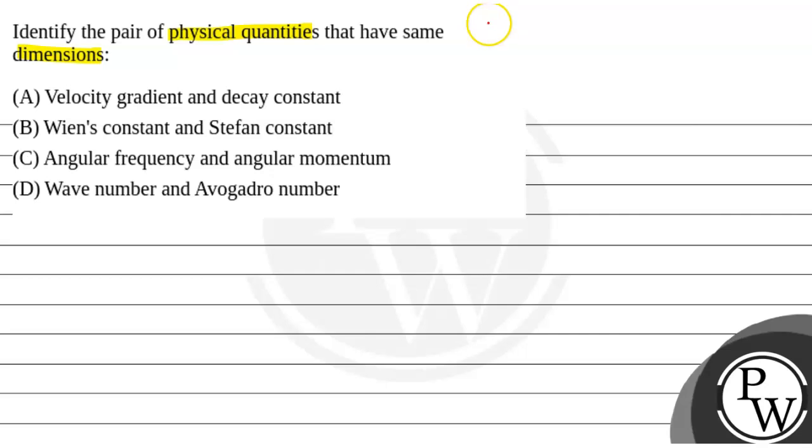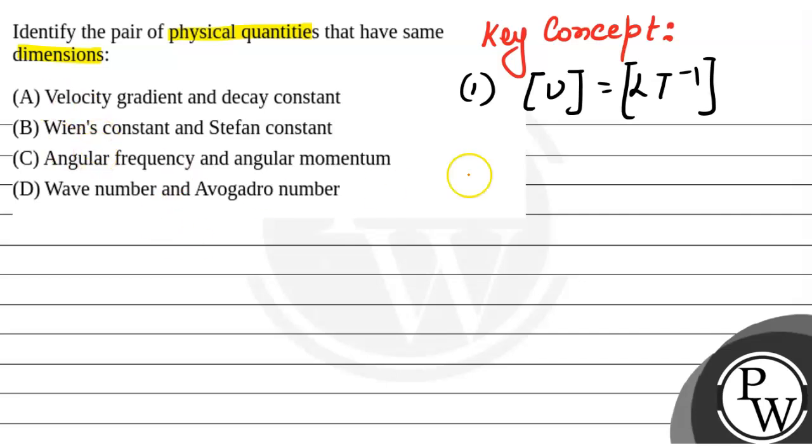Before jumping into the solution, let us discuss the key concept that will be used in solving the problem. The first concept is that the dimension of velocity equals LT to the power minus 1. These are the basic dimensions that you need to know.